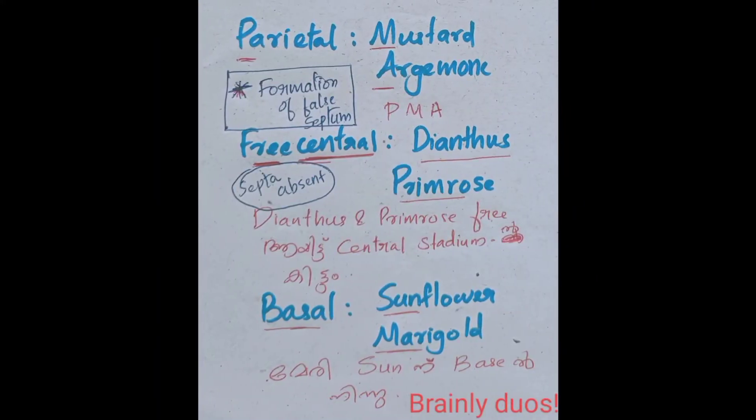Parietal placentation is called mustard, argemone. PMA. PMA is called parietal M mustard argemone.